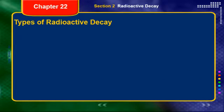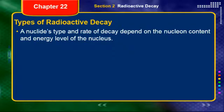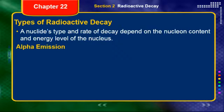Now let's look at the different types of radioactive decay. There are several types, and you need to know each type, discuss the process, and describe its effect on the nucleus. A nuclide's type and rate of decay depend on the nucleon content and the energy level of the nucleus — referring to the magic numbers and the nuclear energy shell model.